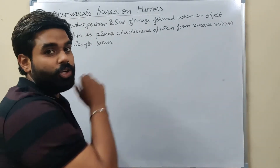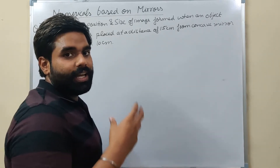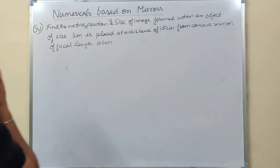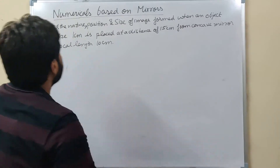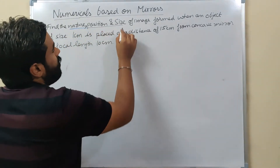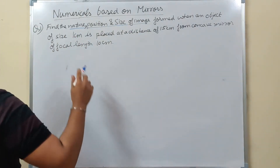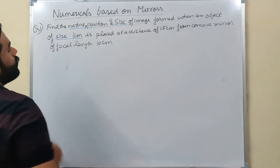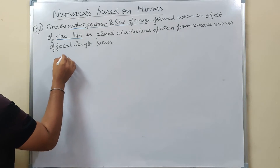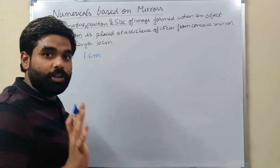These are the things they ask - either in the ray diagram part or in the numerical part, or both. Sometimes it comes in a five-mark question. So what do we need to tell them? Nature, position and size of image.